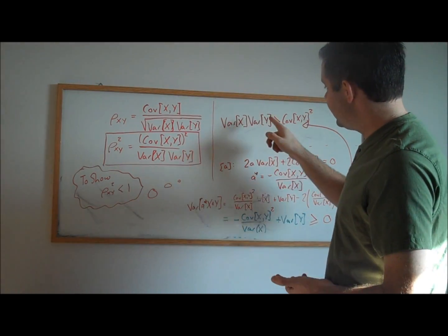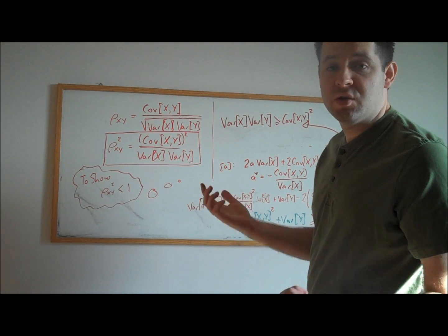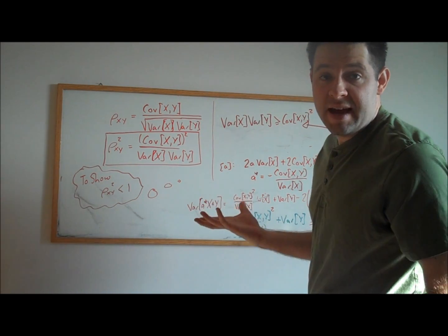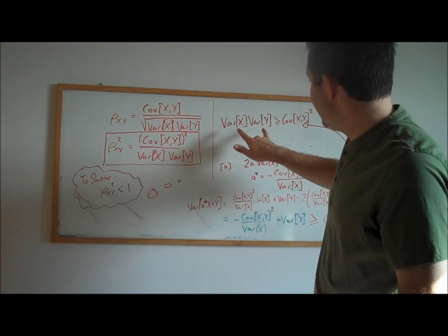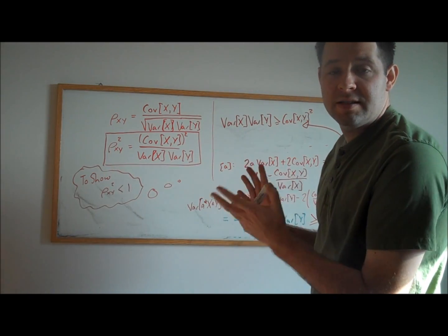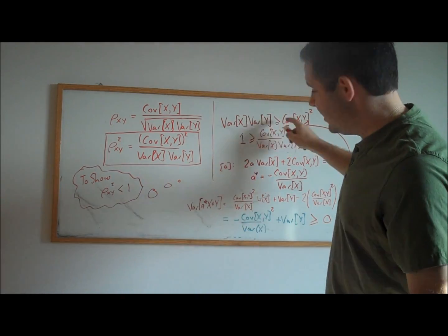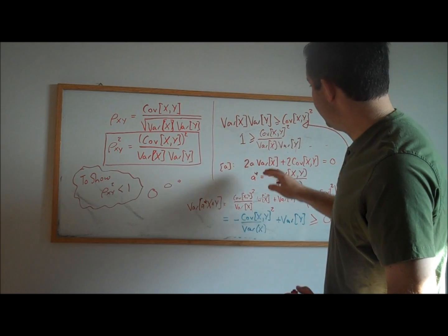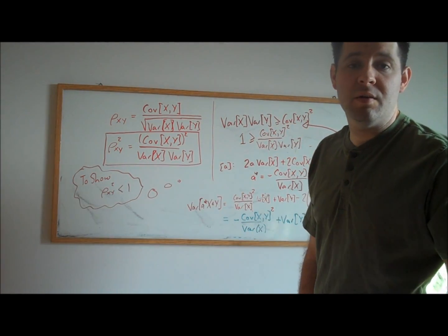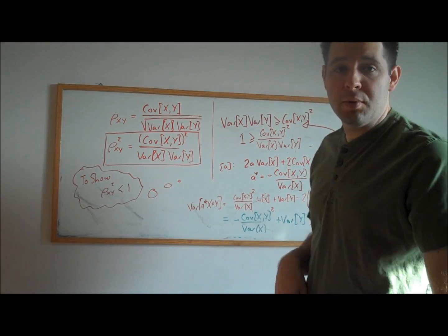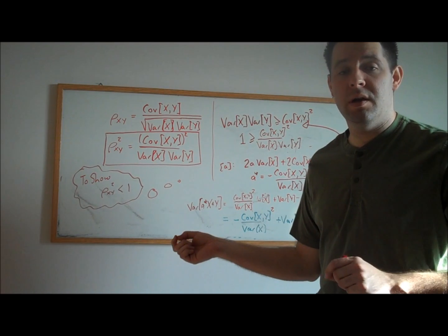So the variance of x times the variance of y is bigger than the covariance of x and y squared. Now this is actually exactly the inequality that we're looking for. And to see this, we can divide both sides by the variances on the left-hand side. We get exactly what we were hoping to get. This is the correlation squared, and we've just shown that the correlation squared is less than 1 in magnitude. Now that completes the proof that the correlation must be between negative 1 and 1.